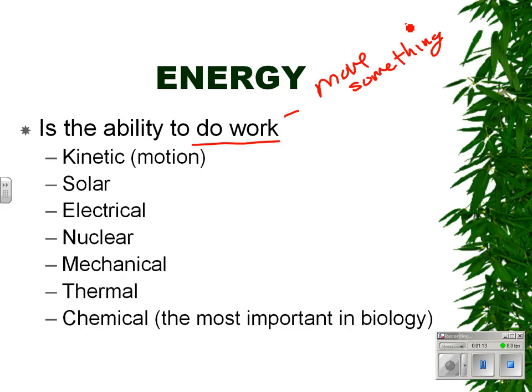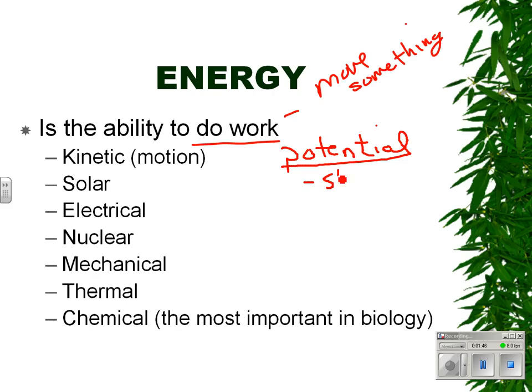Here are some examples of energy that we find around us: kinetic energy, solar energy, electrical energy, nuclear energy, mechanical energy, thermal energy, and chemical energy. Now there's a word not on here that you may have heard — and I wanted to add that to this list — and that is the term potential energy. Potential energy is the energy something has because of where it is, or sometimes we call this stored energy.